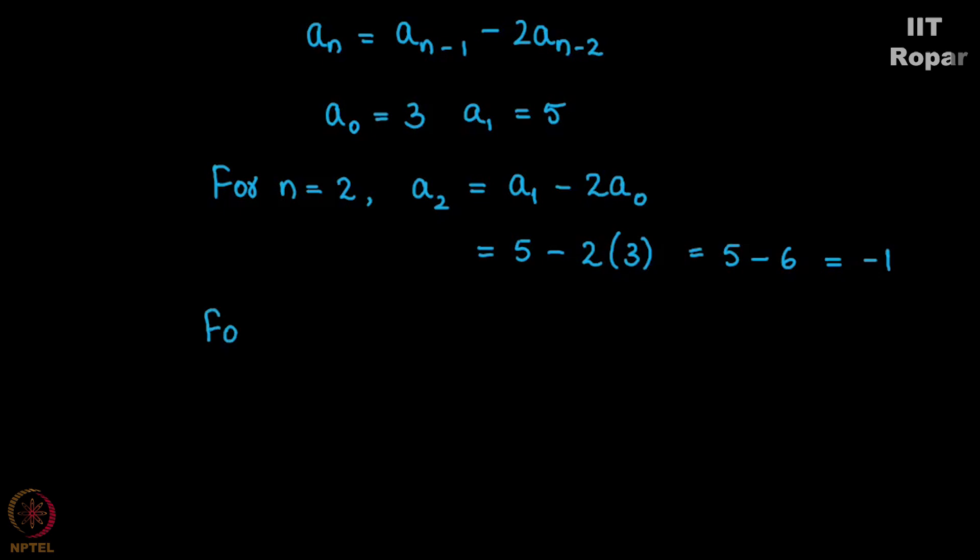Now when I substitute n as 3, I get A3 = A2 - 2A1. Do you see, earlier to calculate A2 we wanted A0 and A1, now for A3 we want A1 and A2. The relation is you need the preceding terms to find the next terms.